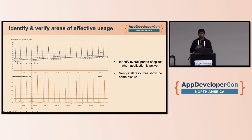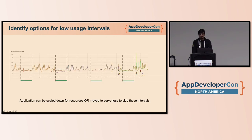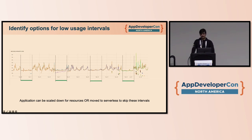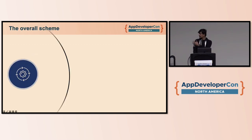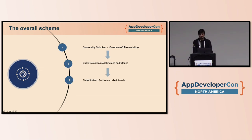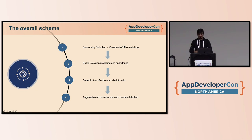As a whole, considering multiple resources gives you the complete picture. Once you have this, the work is cut out — you have the idle interval where you can scale down resources, and the active interval where the application is doing the major work, so you focus the application's runtime on those intervals. The overall pipeline is: detect seasonality, model the resources, figure out spikes, identify when the application is most active, and finally aggregate across resources for the complete picture.